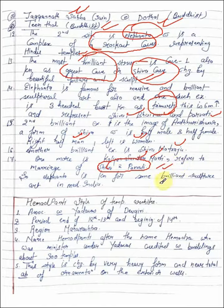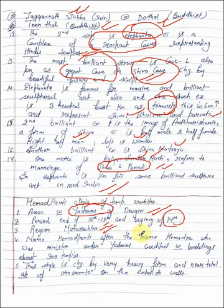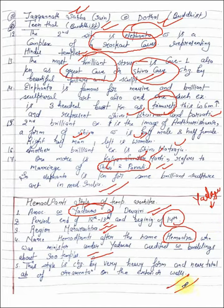Then Hemadpanti style of temple architecture. It is associated with Devagiri's Yadavas. The period is 12th to 13th century and beginning of 14th century. This is very famous in Maharashtra area. The name Hemadpanti after the name Hemadra, who was minister under the Yadavas, credited with building about 300 temples. This style is characterized by very heavy form and near total absence of ornamentation on the exterior walls. It was a very heavy form, but ornamentation on the outside was absolutely absent.